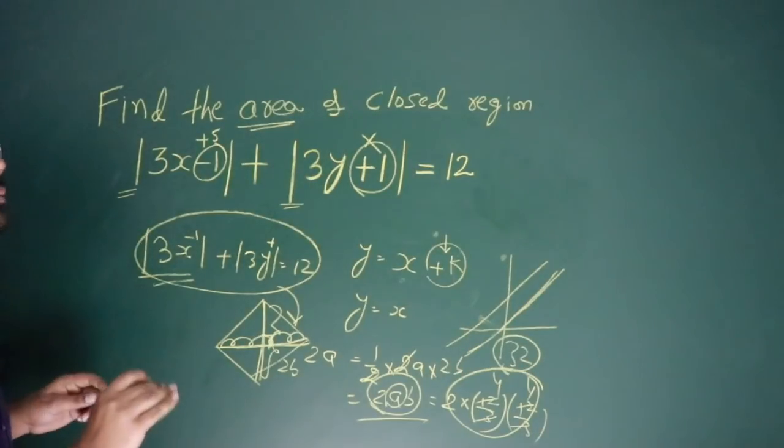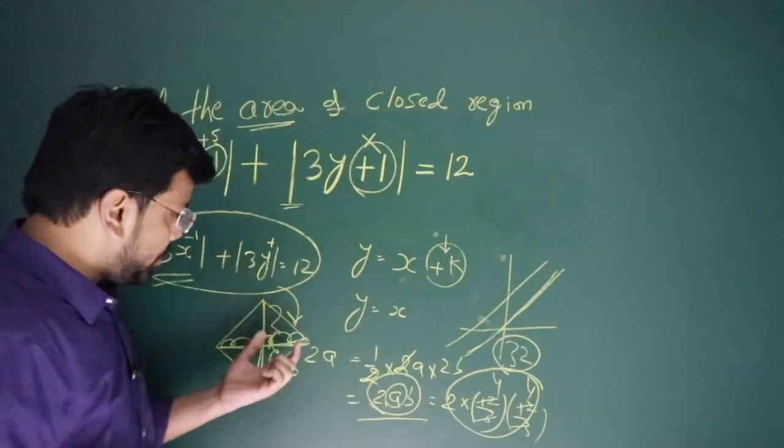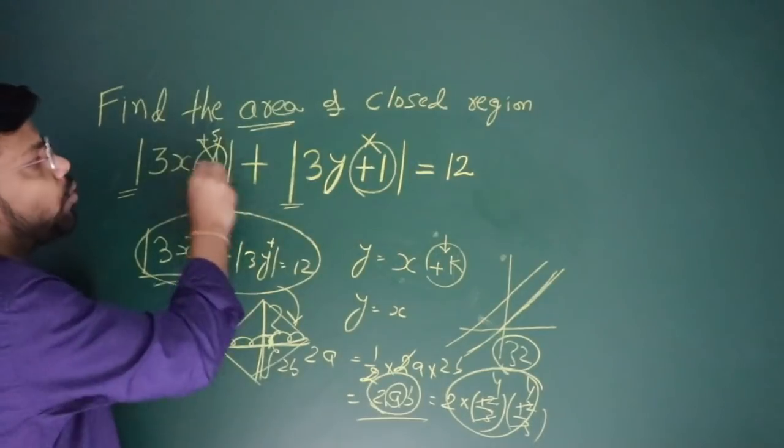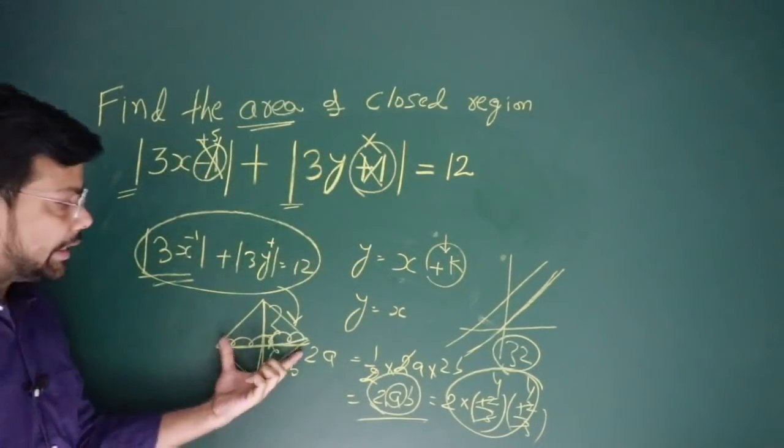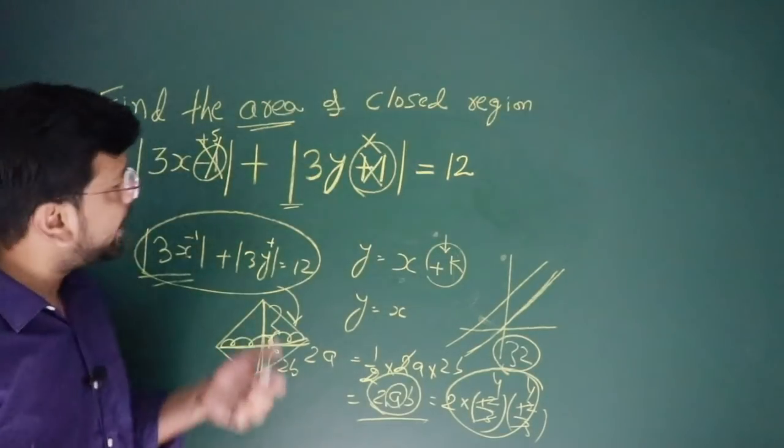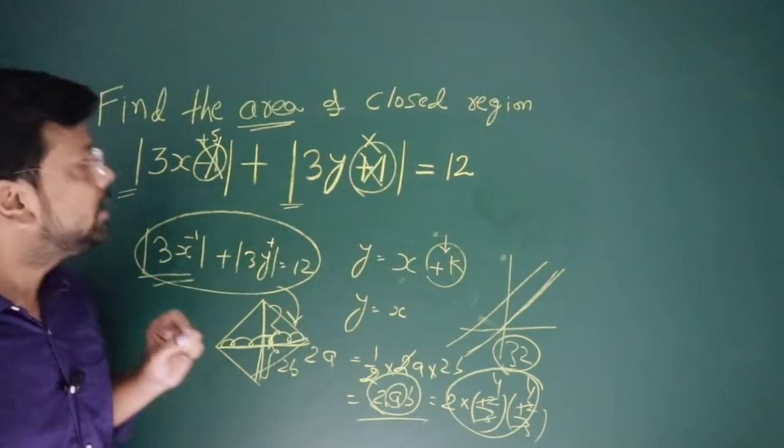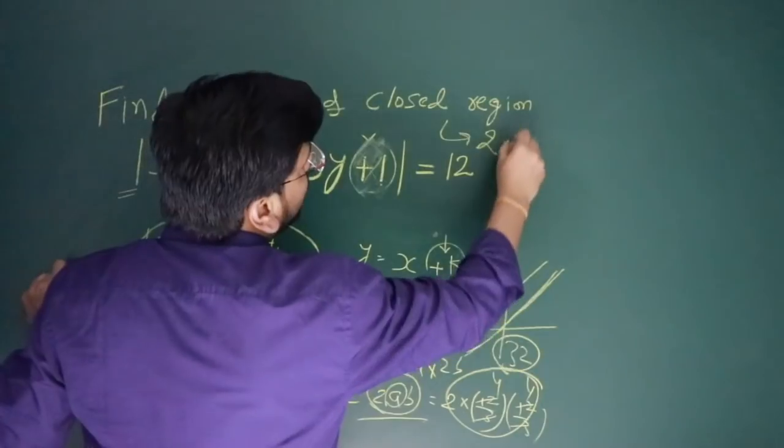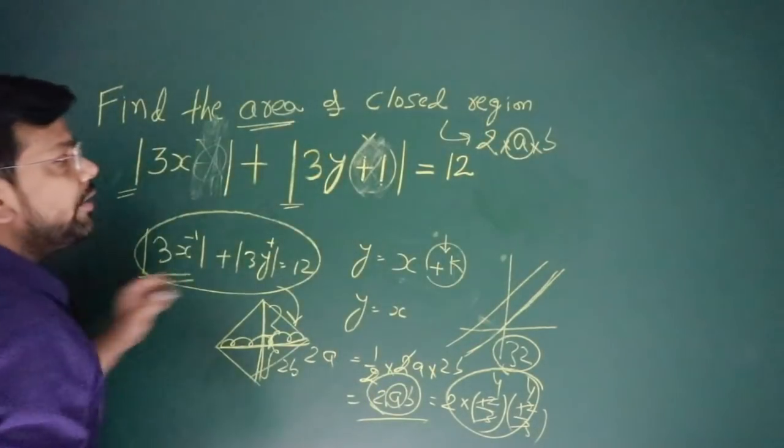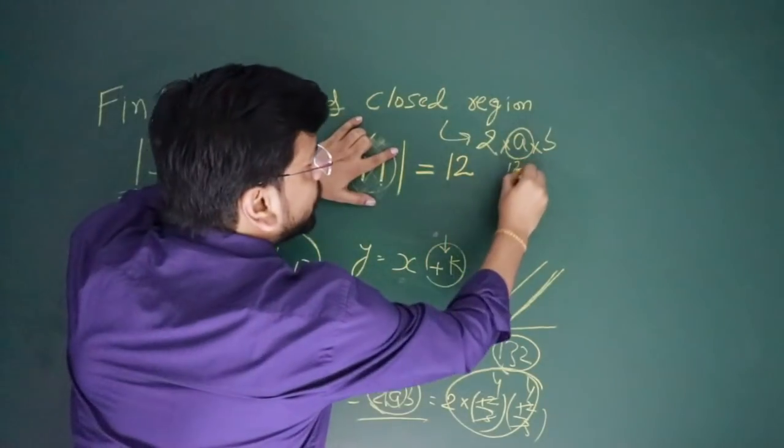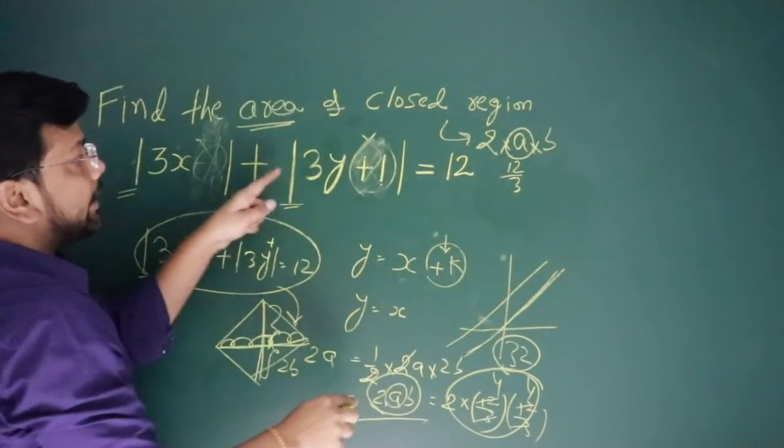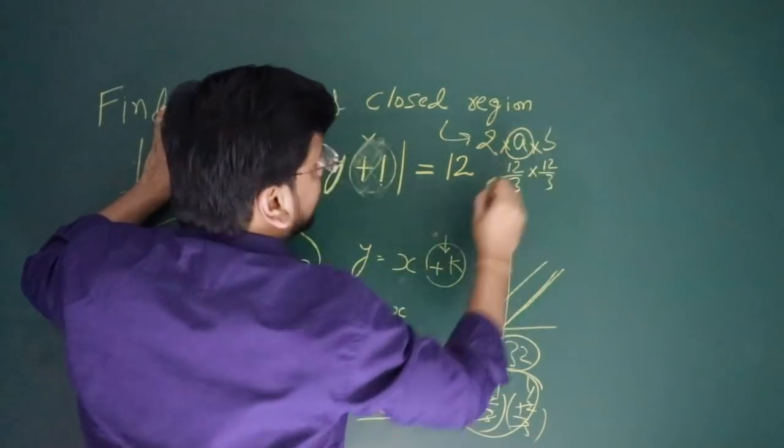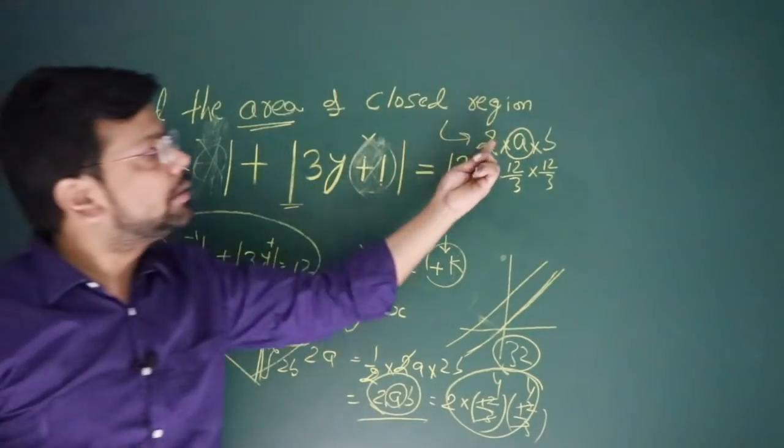I hope it is clear. Whenever you have this type of question, it's hardly a 5-second problem. You just need to work on the shifting of the system. Shifting of the system has no role. You just need to find the diagonal, major diagonal and minor diagonal. First remove the constants. Area is 2 × a × b. What is a? When there is no y, 3x = 12, so x = 4. When there is no x, 3y = 12, so y = 4.